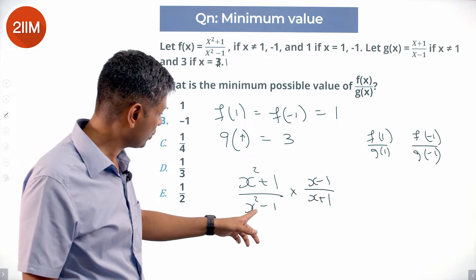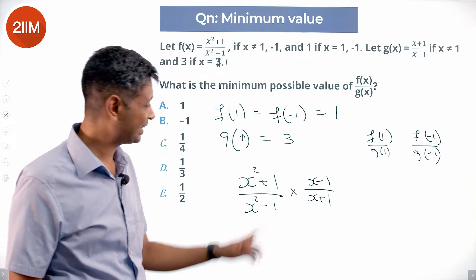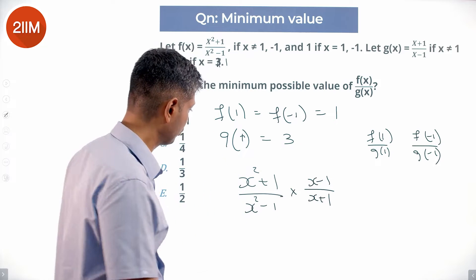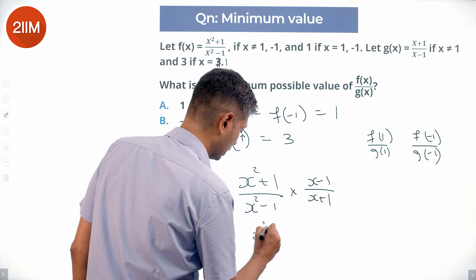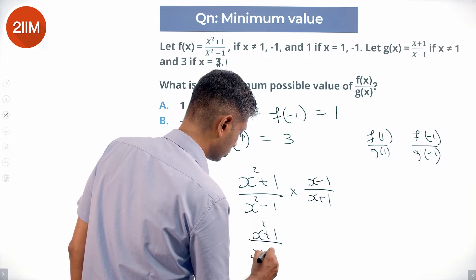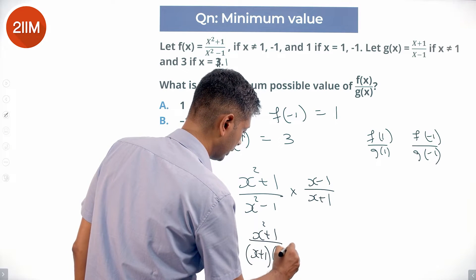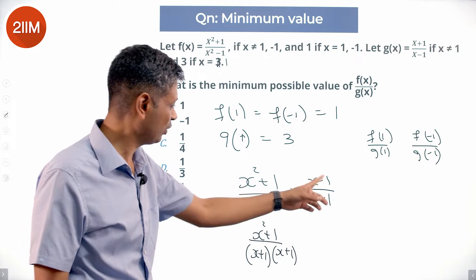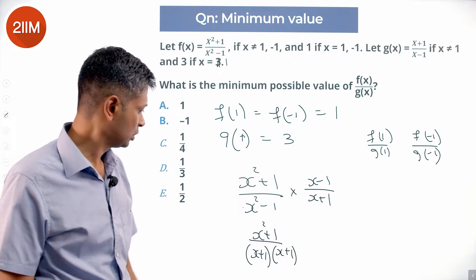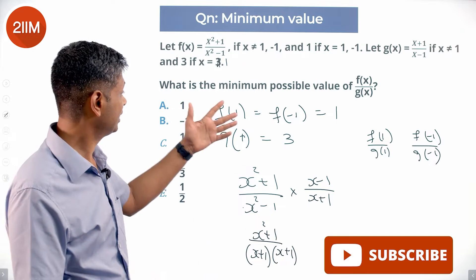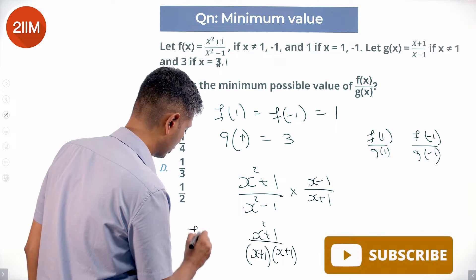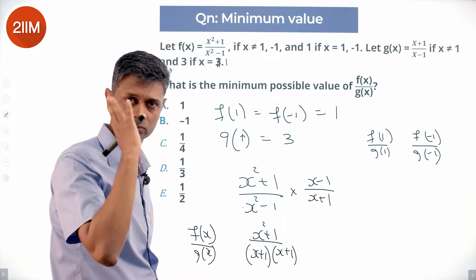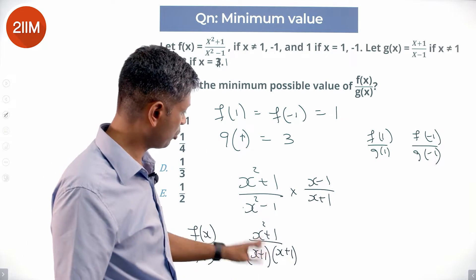Simplifying: x² - 1 factors as (x - 1)(x + 1). Cancel (x - 1), giving (x² + 1)/(x + 1) times 1/(x + 1), which is (x² + 1)/(x + 1)². That's what f(x)/g(x) simplifies to, and I want to find the minimum possible value of this.